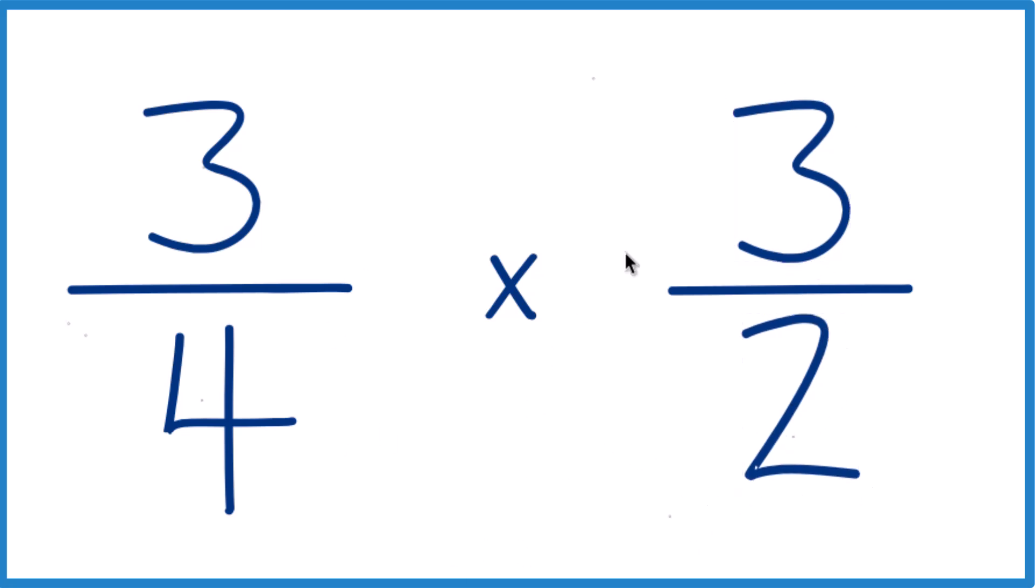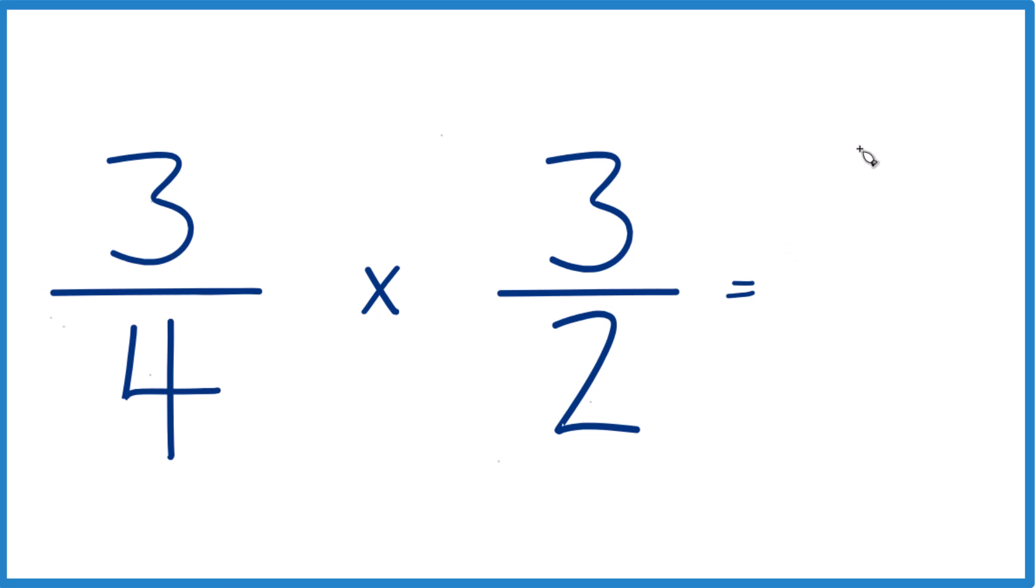Because now we're just going to take three times three. Three times three is nine, and four times two is eight. So we end up with nine-eighths.